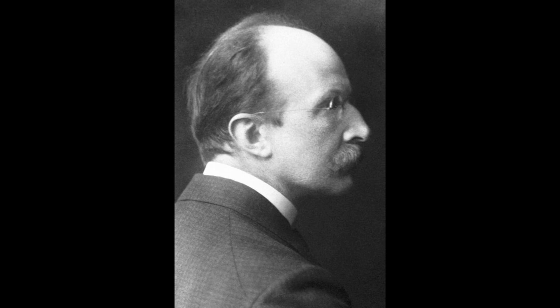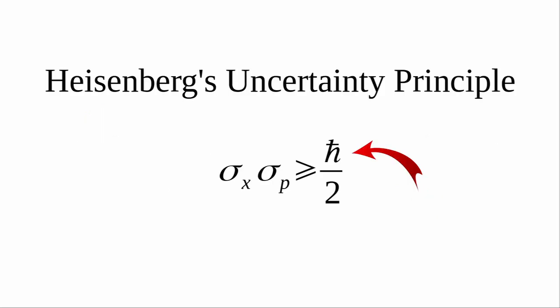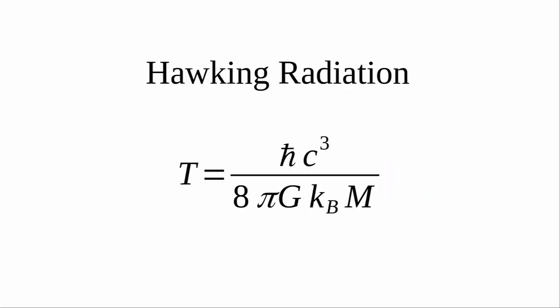Planck's constant is extremely important in quantum mechanics. It can be found in complicated equations like Schrodinger's equation, the Heisenberg uncertainty principle, the de Broglie equation, and Hawking radiation.